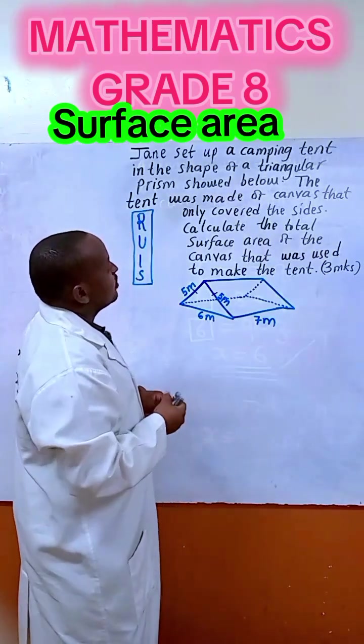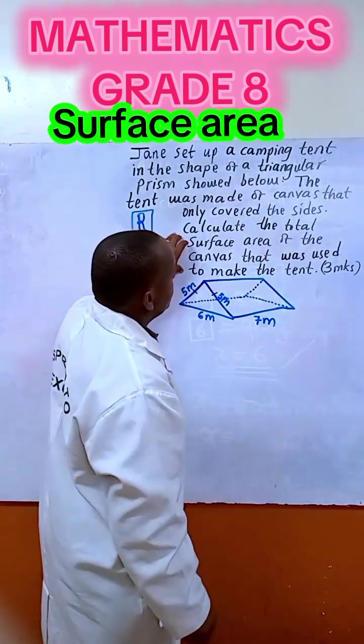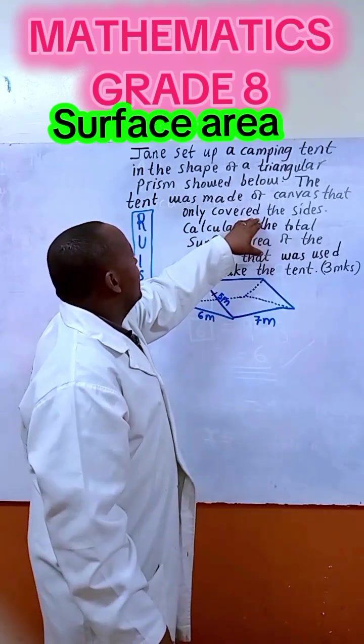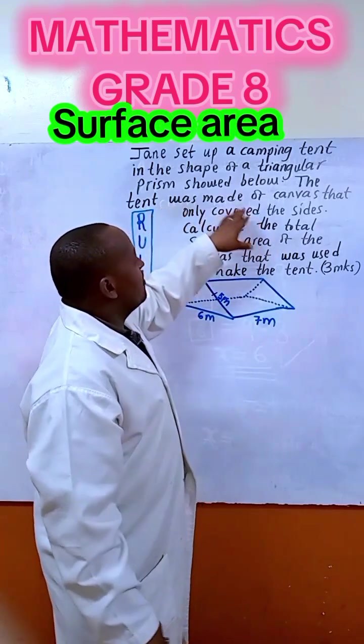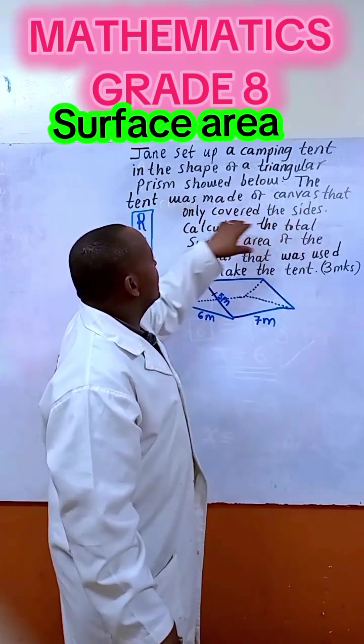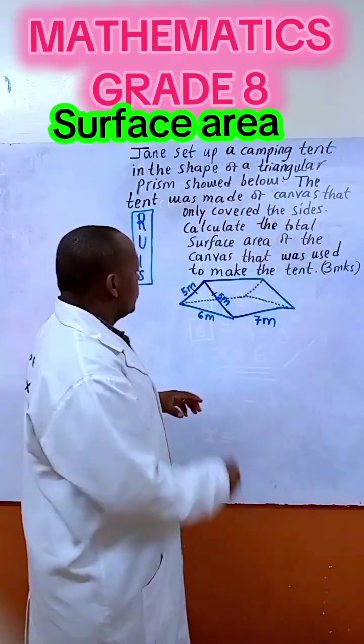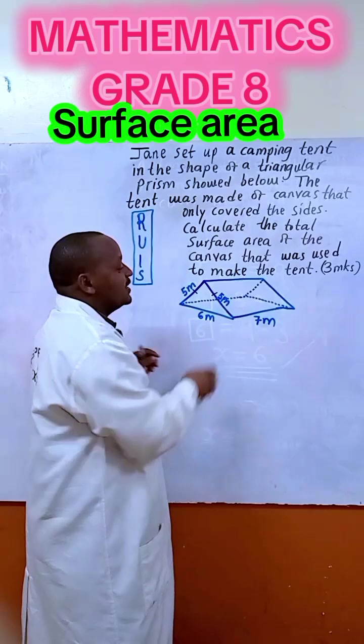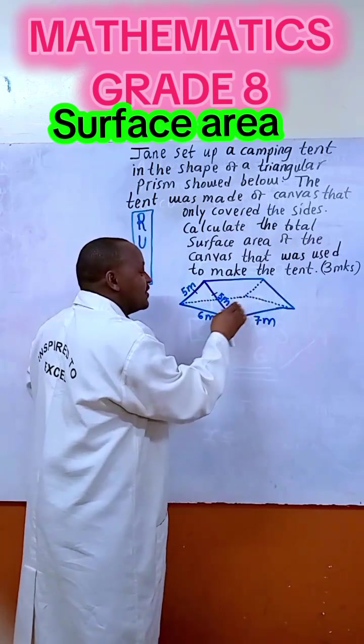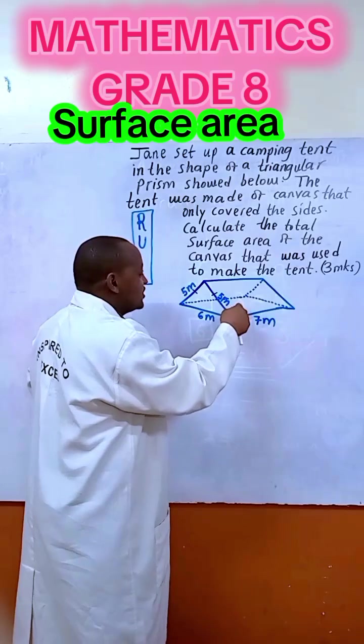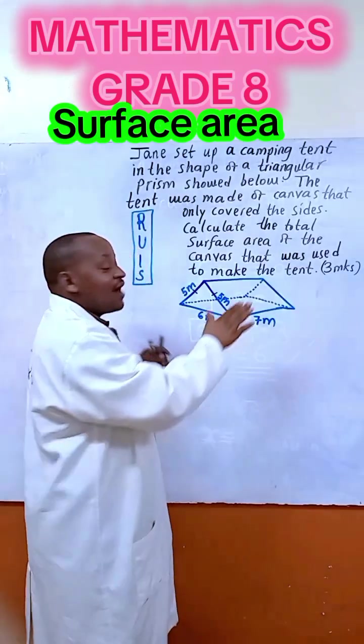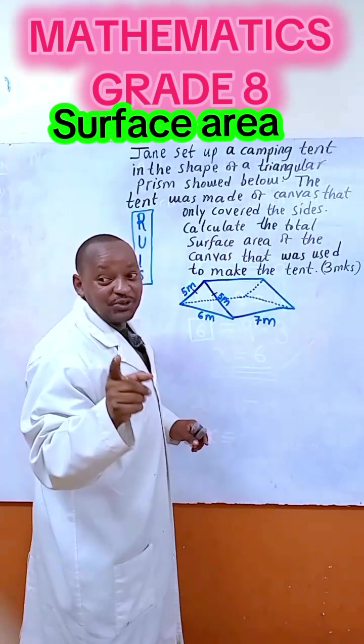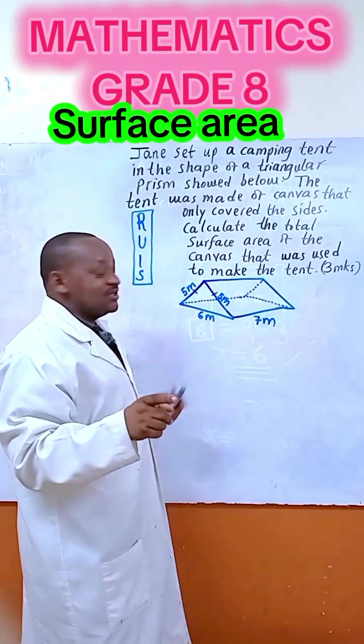Pay attention, we need to know that the material was touching the sides. We have been told the canvas only covered the sides. So this canvas material just made this tent, it is not covering the ground, it is not touching the ground, it is covering the sides. We need to understand that, that is very important before you start doing this.